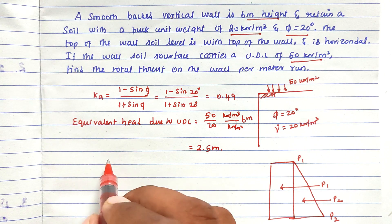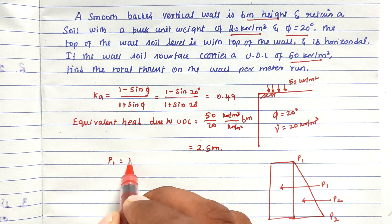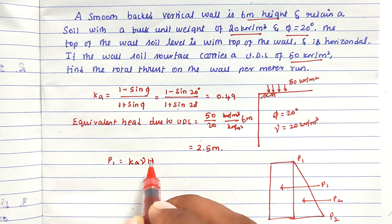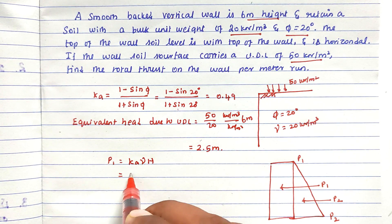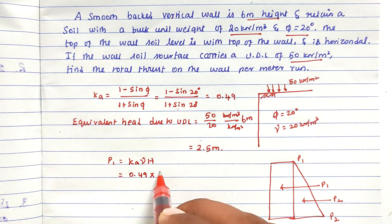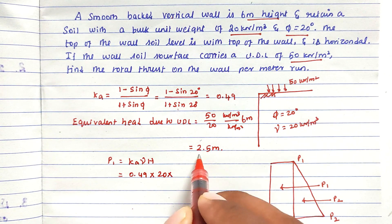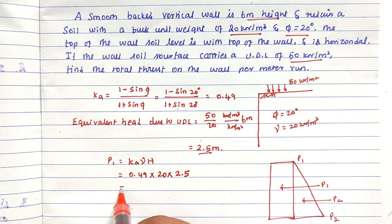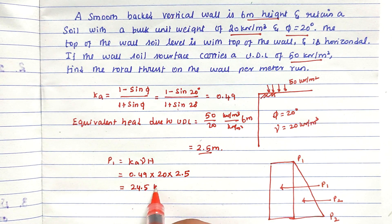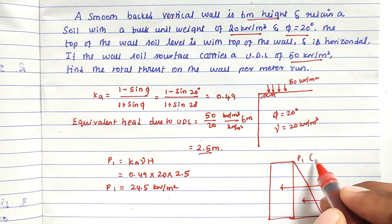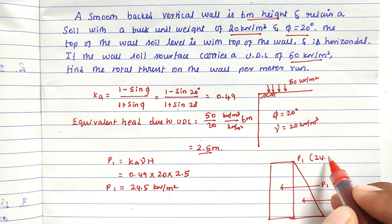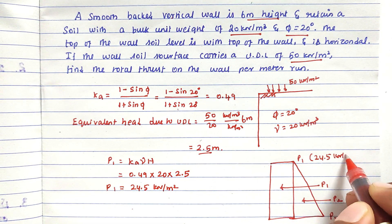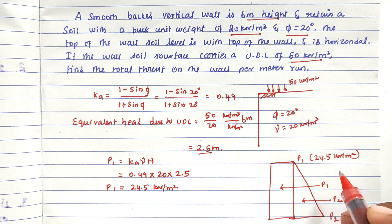Now we can find out the p1 value, which is the pressure at the top of the wall. P1 equals Ka into gamma into h, so that is 0.49 into 20 into 2.5. Solving this, we get 24.5 kilo Newton per meter square. So p1 equals 24.5 kilo Newton per meter square.